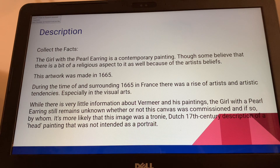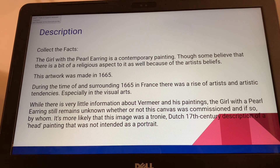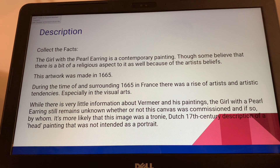Girl with a Pearl Earring is a contemporary painting. Some believe there's a religious aspect to it, because Vermeer was a strong Christian with many religious beliefs, so some think that leaked into this piece, while others don't believe there's any religious aspect. This artwork was made in 1665 in France, a time of rising artistic tendencies, especially focused in the visual arts.